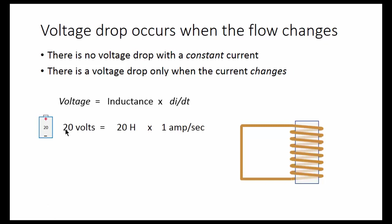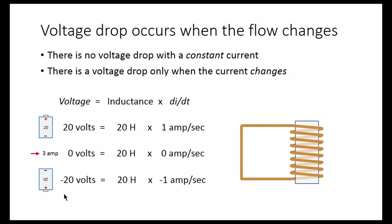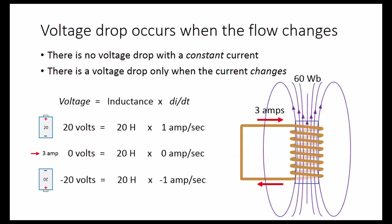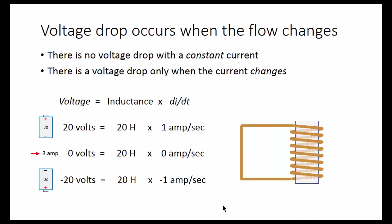For example, when we applied 20 volts, the current increased at a rate of 1 amp per second. When we removed the battery, there was zero volts around this loop and the flow was constant — no change in current. And when we put the battery in backwards and applied a negative voltage, the current decreased by 1 amp per second. Let's watch that again. One, two, three — constant current, zero volts, zero change. Now put the battery in backwards — one, two, three.